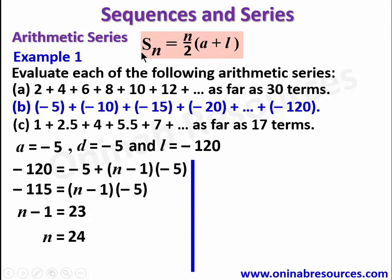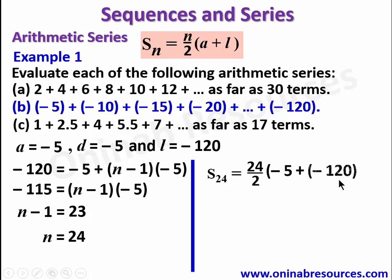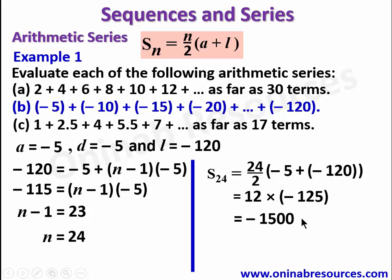Now using Sn equals n over 2 into a plus l, we have S24 equals 24 over 2 into negative 5 plus negative 120. Simplifying: 12 into negative 125 equals negative 1500.